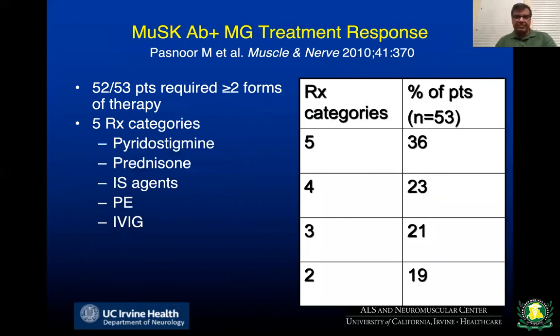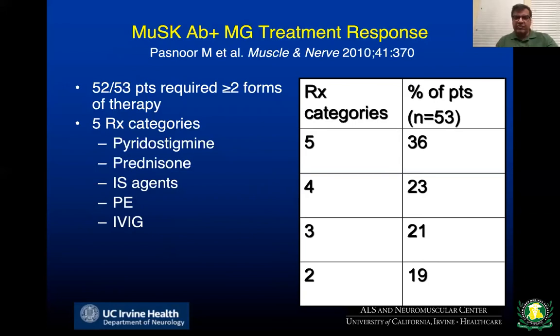Patients with MuSK myasthenia tend to require two or more forms of treatment, and up to 36% of patients required all agents, including pyridostigmine, prednisone, immunosuppression, plasma exchange, or IVIG. This form of disease also does not respond to pyridostigmine, and some patients actually get worse with it. The nerve conduction studies may be only minimally abnormal. The notion is that patients with MuSK antibody tend to have more severe disease that is more difficult to control.